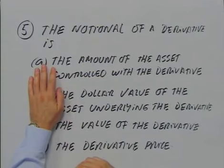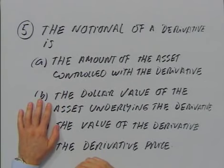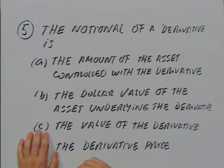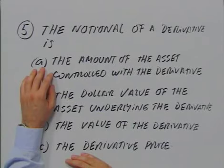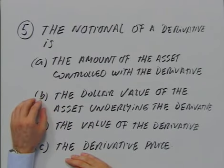The notional — also called the notional value of a derivative — is what? The amount of the asset controlled with the derivative, the dollar value of the asset underlying the derivative, the value of the derivative, or the derivative price. It is not the derivative price, since a forward contract doesn't have a price — only a forward price. It is not the value of the derivative — for an option that would be the premium. And it's not simply the number of barrels of oil controlled. It is the dollar value of the asset underlying the derivative. B is the correct answer.